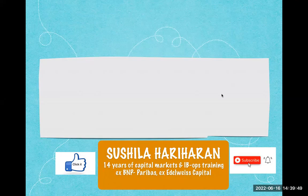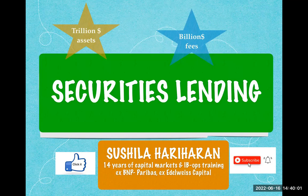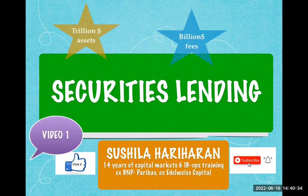This is a trillion-dollar industry generating billions of dollars of fees for custodians, investment banks, mutual funds, pension funds, etc. I'm talking about the largest sub-segment within the trade life cycle of equities — the securities lending market. This market spans 45 countries in the world and generates significant revenues for custodians and lenders. I'll be conducting a series of videos on securities lending and collateral management; this is the first video.